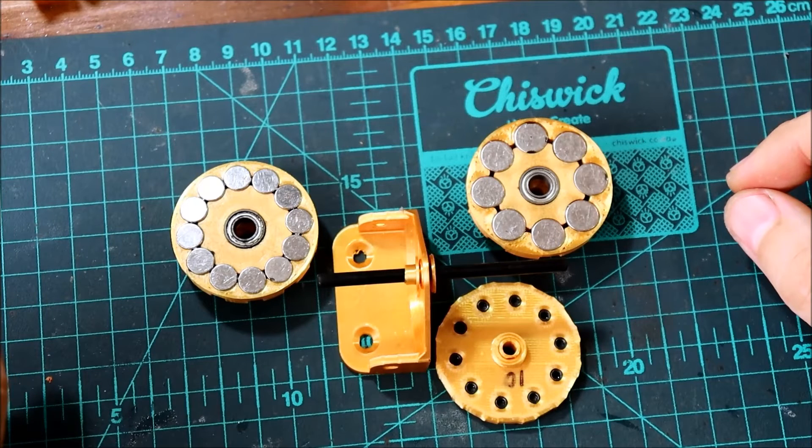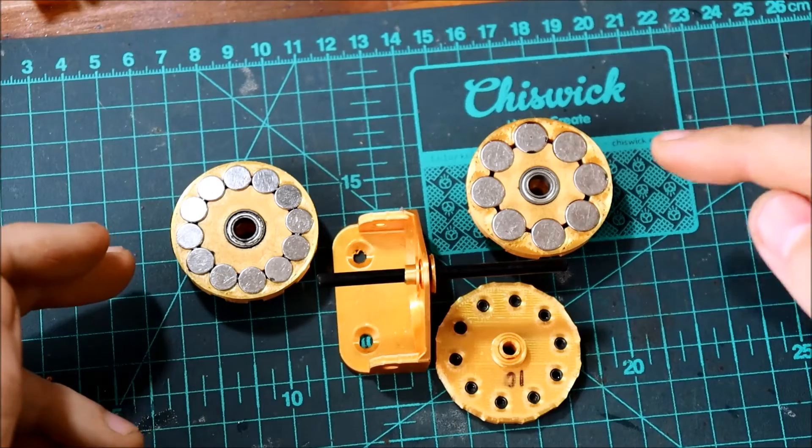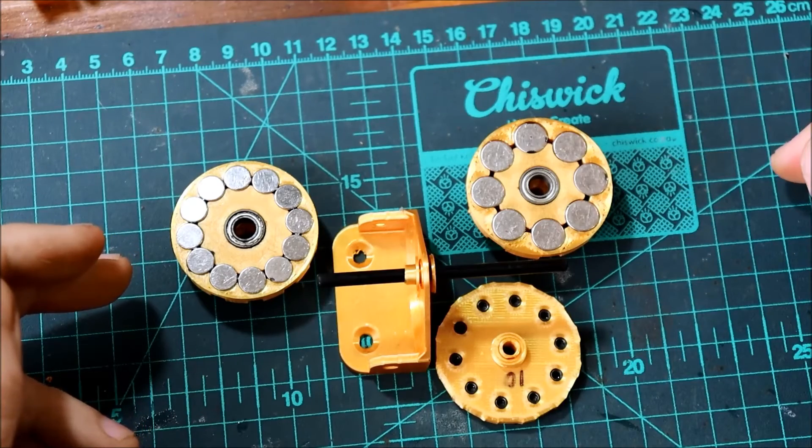All is not lost though for the fractional ratios. Take this simple 3 to 2 ratio with 12 magnets, 8 magnets and 10 pole pieces.